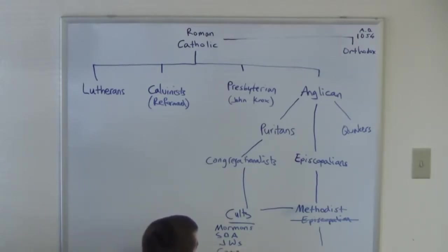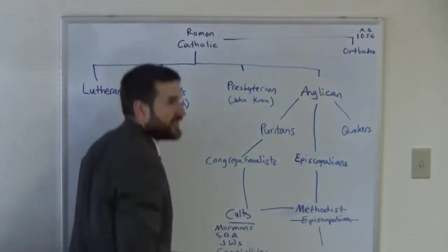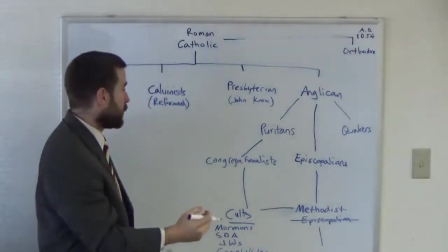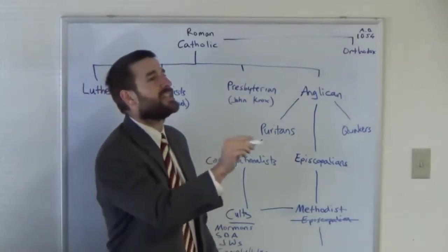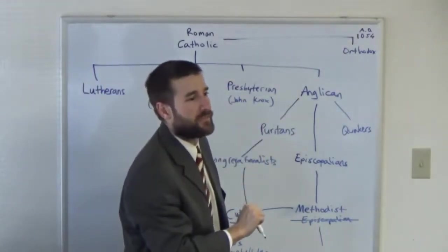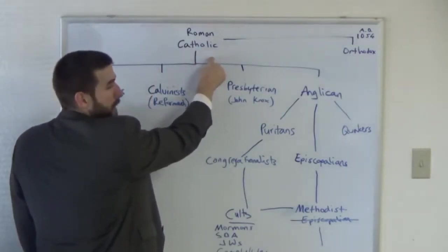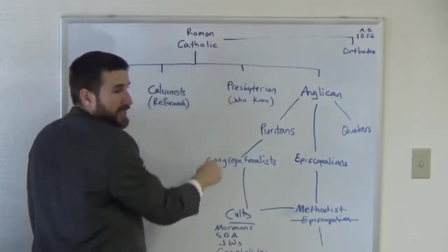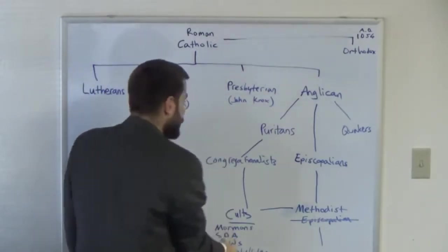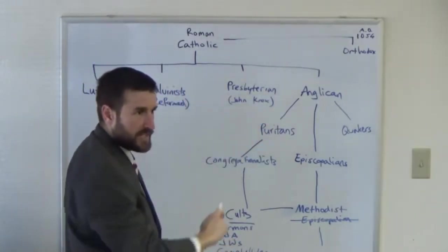The Campbellites today are known as the Church of Christ. And the distinguishing thing about the Campbellites was they said, well, baptism's by immersion but you have to be baptized to be saved. So they still hung on to that saved-by-baptism thing from mama up here, or great-grandmother as it were. But they said it's by immersion but you have to be baptized to be saved.